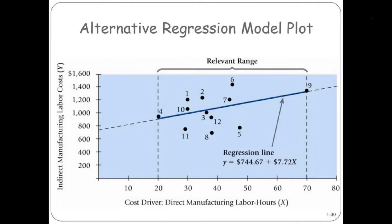It has a concept of R — the R value in regression analysis. R is some number between negative 1 and 1. Zero is in the middle. The closer you are to negative 1 or 1, the better the fit. The closer you are to zero, the worse the fit.